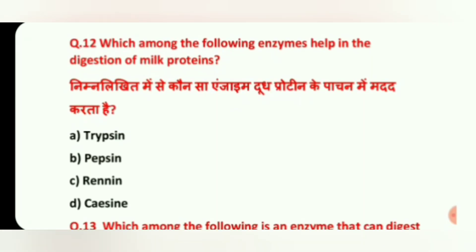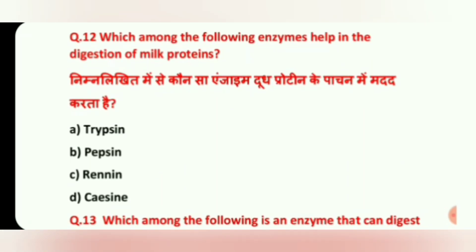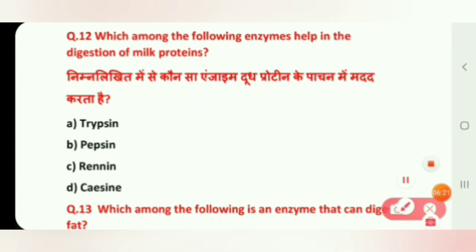Question 12: Which among the following enzymes helps in the digestion of milk protein? Options are: Trypsin, Pepsin, Renin, and Casein. The correct answer is C, Renin.